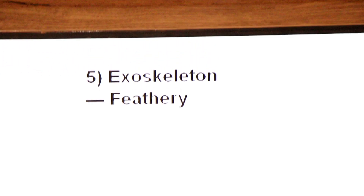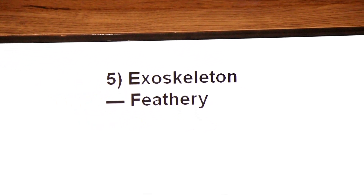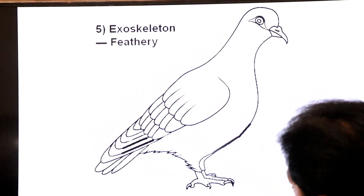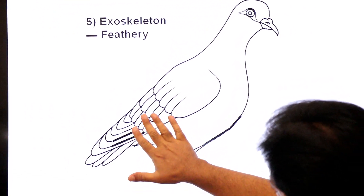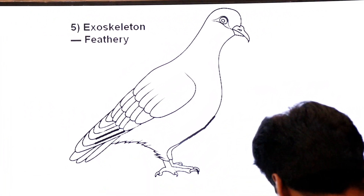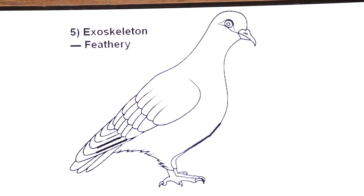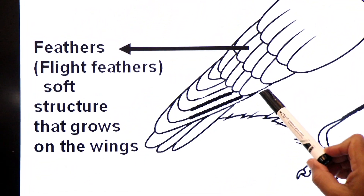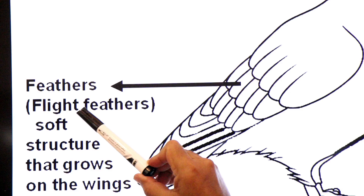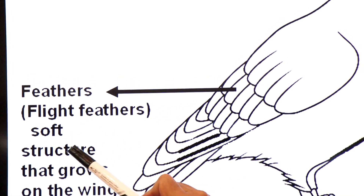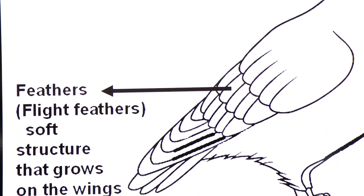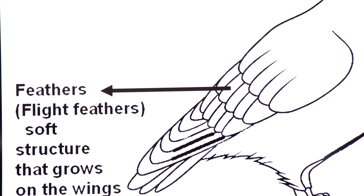The exoskeleton of birds is feathery, in the form of feathers. You can see on the bird's wing soft structures — feathers, wing feathers. These are the flight feathers, soft structures that grow on the wings, and they form the exoskeleton of birds.